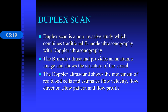Duplex scan has an advantage over regular Doppler ultrasound because the B-mode component allows you to see the vessel structure. It is also better than angiography in cases of total occlusion: when doing angiography, dye doesn't pass beyond a total occlusion, so nothing further is visible. With duplex scan, the vessel structure is still seen with the thrombus inside it, even when there is no flow.